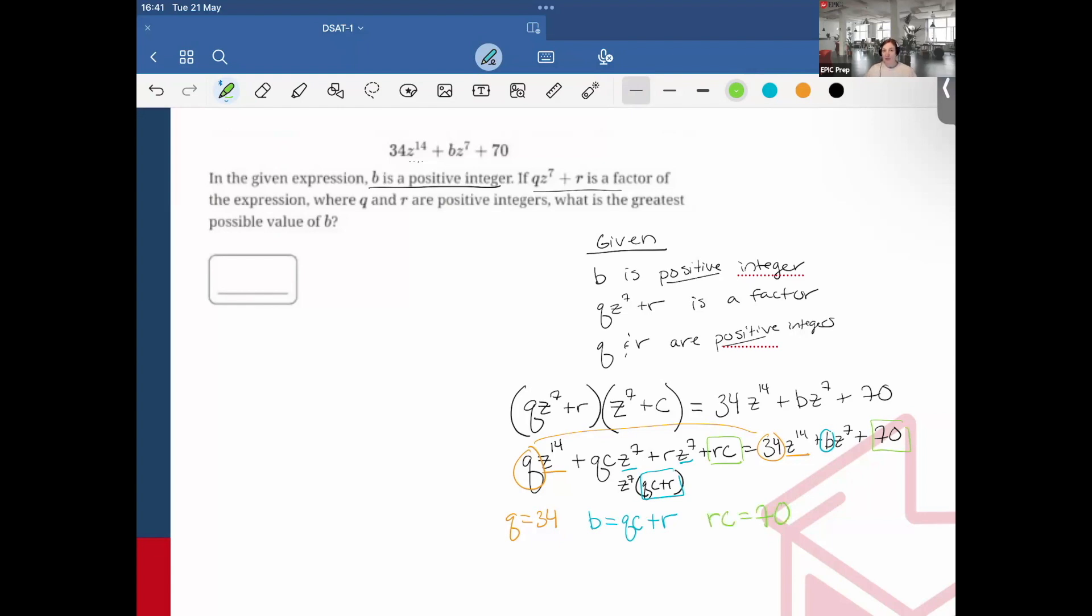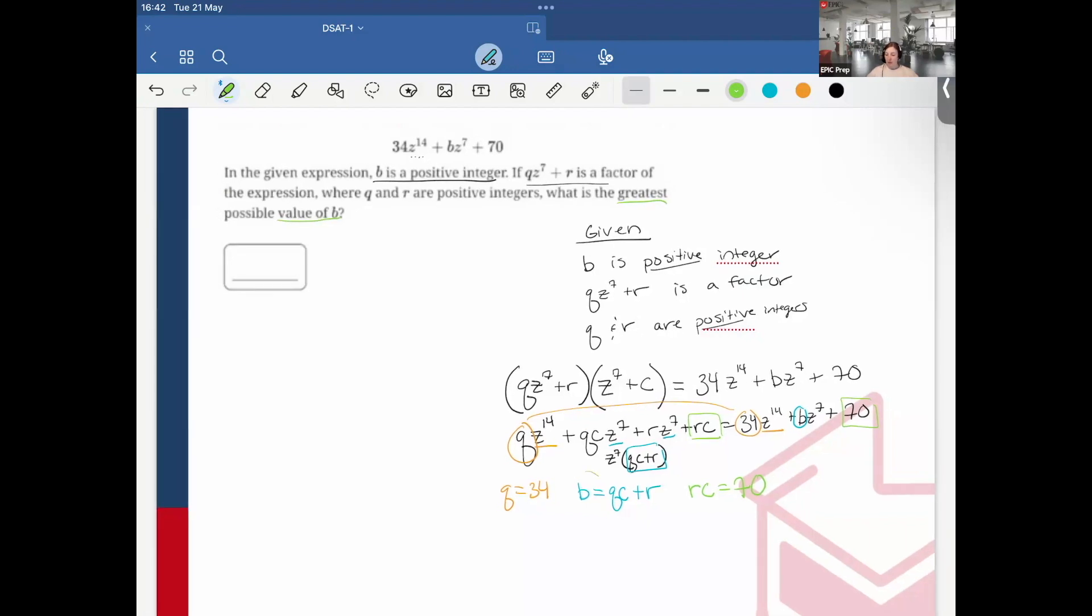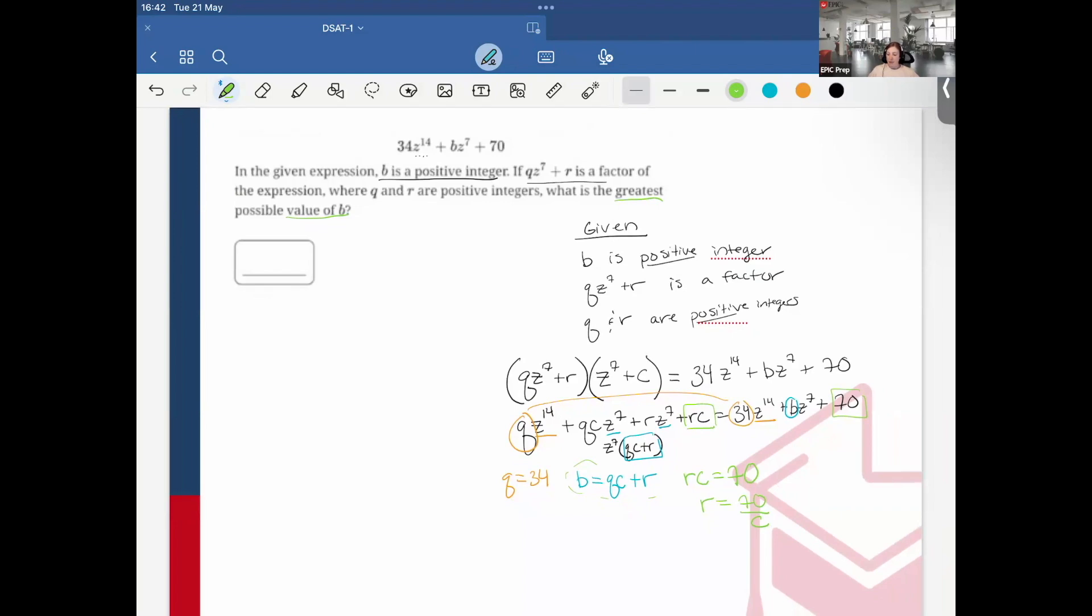Now I have all my equivalences. Remember, I'm asked for the greatest possible value of b. I know that b = qc + r. I could rearrange this: r = 70/c. I know b = qc + r. I know q is 34, so I can plug in 34c + 70/c.